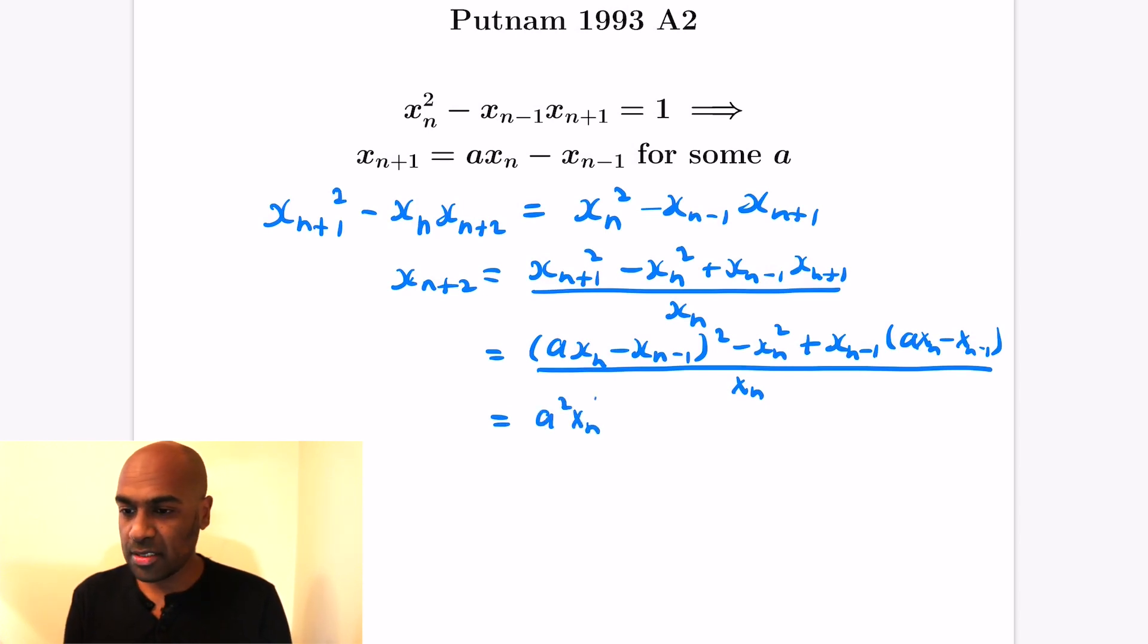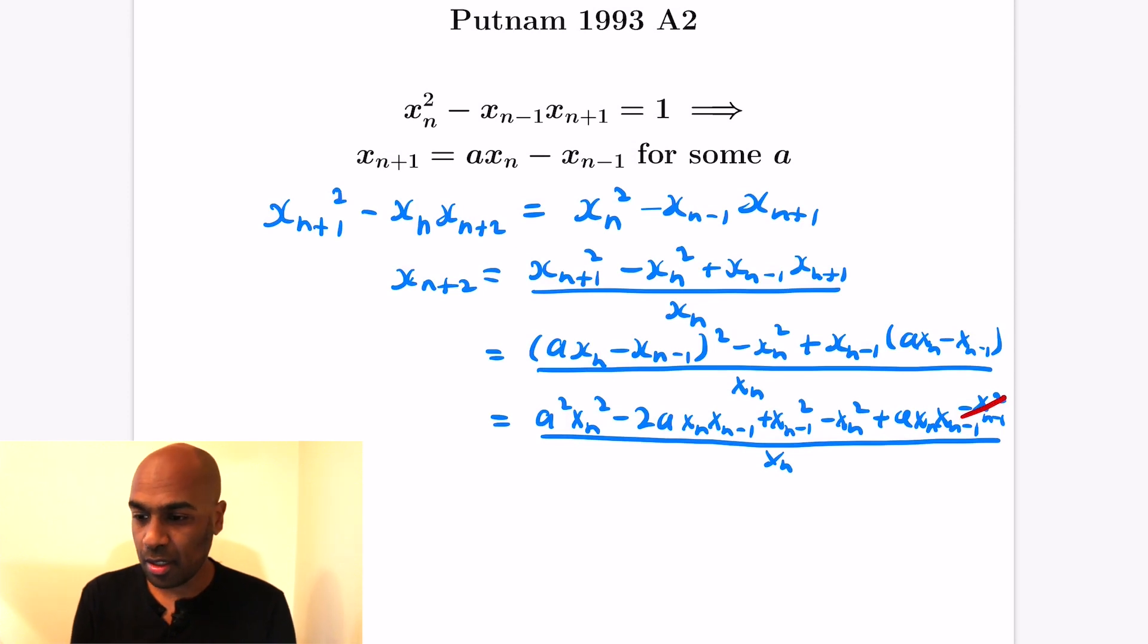Let's do the expansion. We get a squared x_n squared minus 2 copies of a x_n x_{n-1} plus x_{n-1} squared. Then I'm going to take the minus x_n squared here that we have extra, and then we have adding in a x_n x_{n-1}, and then finally we have the minus x_{n-1} squared, and we divide all of that by x_n.